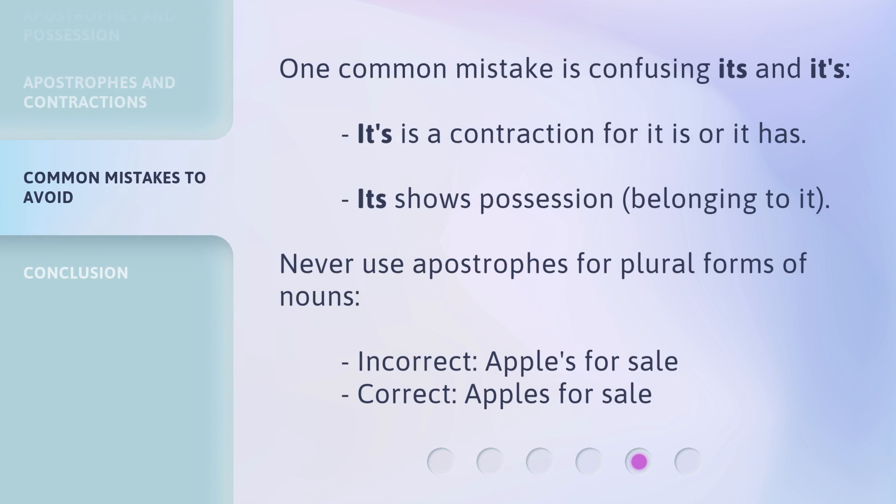One common mistake is confusing 'it's' and 'its.' 'It's' is a contraction for 'it is' or 'it has.' 'Its' shows possession — belonging to it. Never use apostrophes for plural forms of nouns.